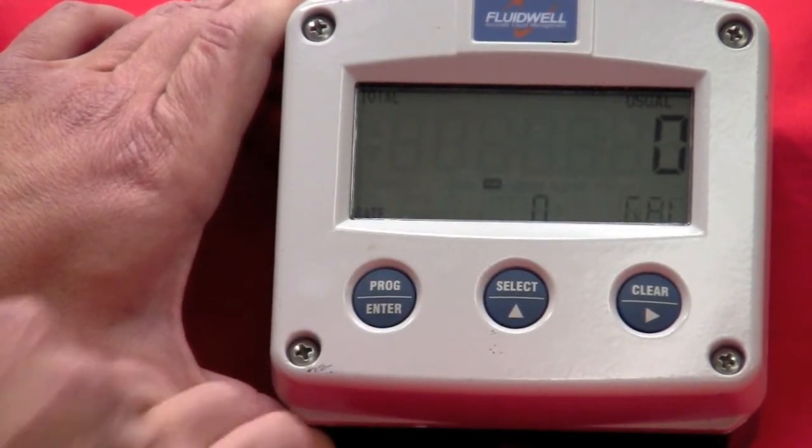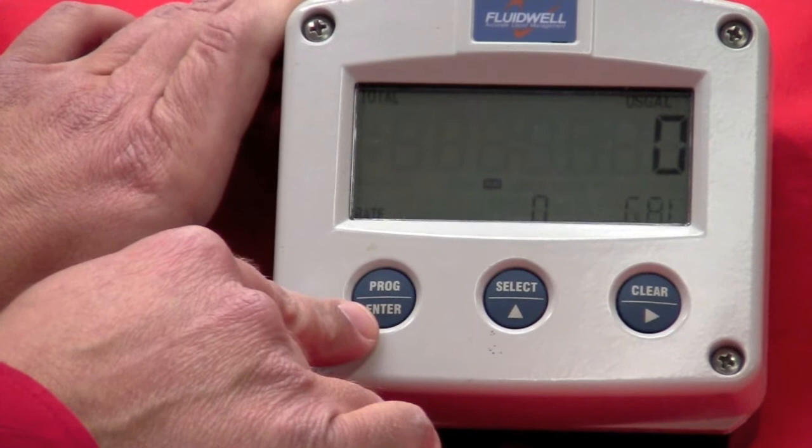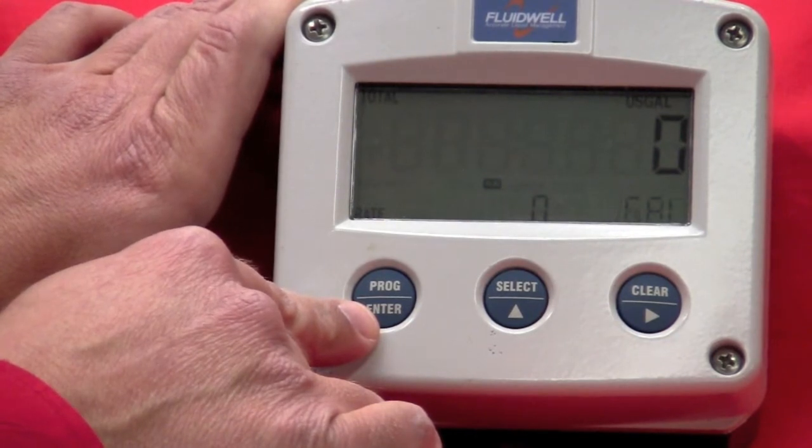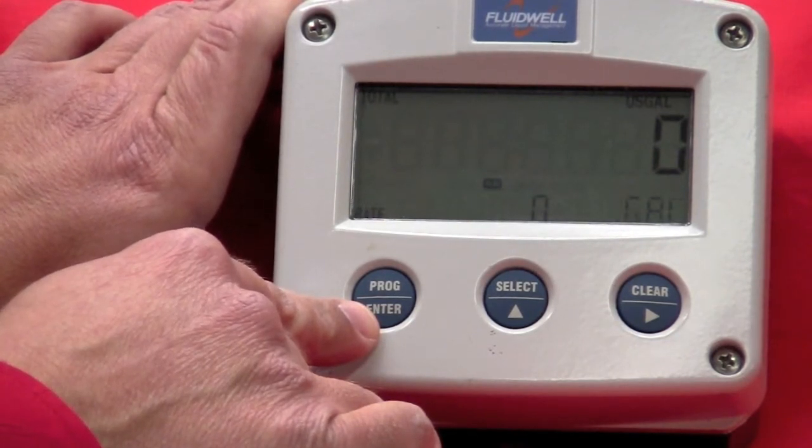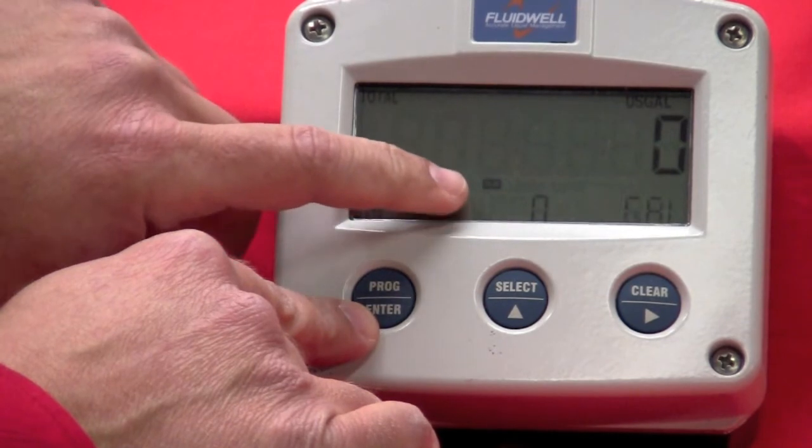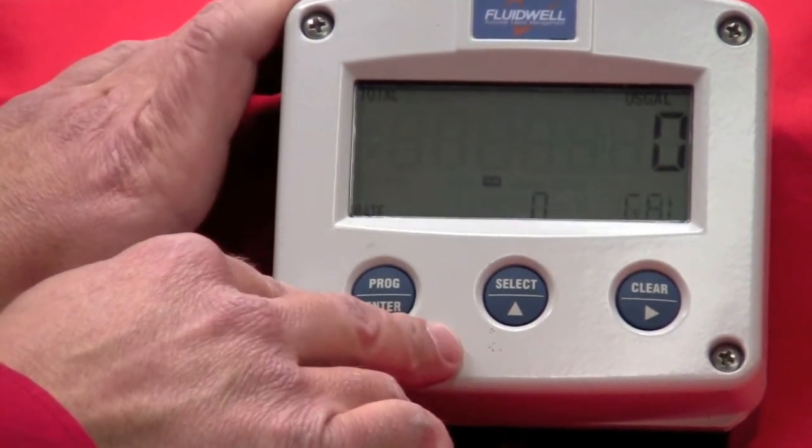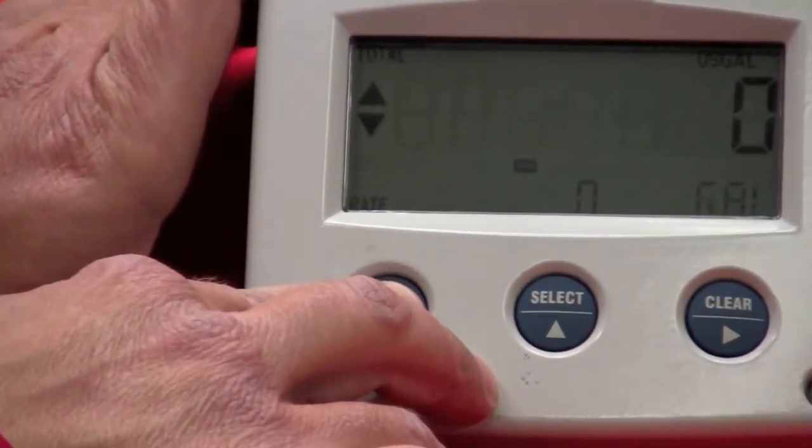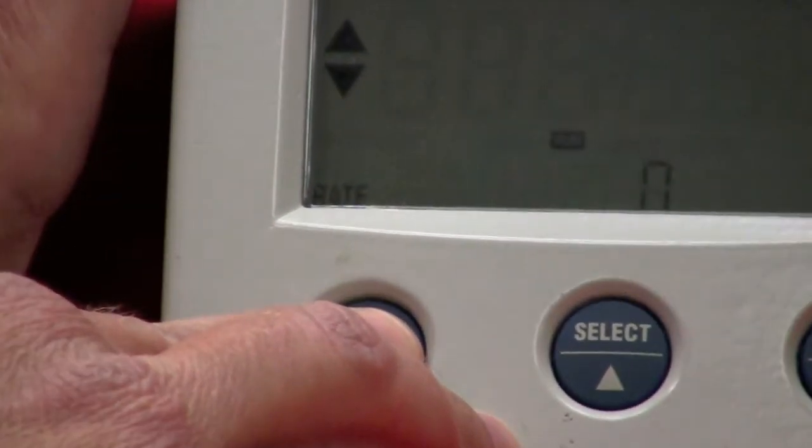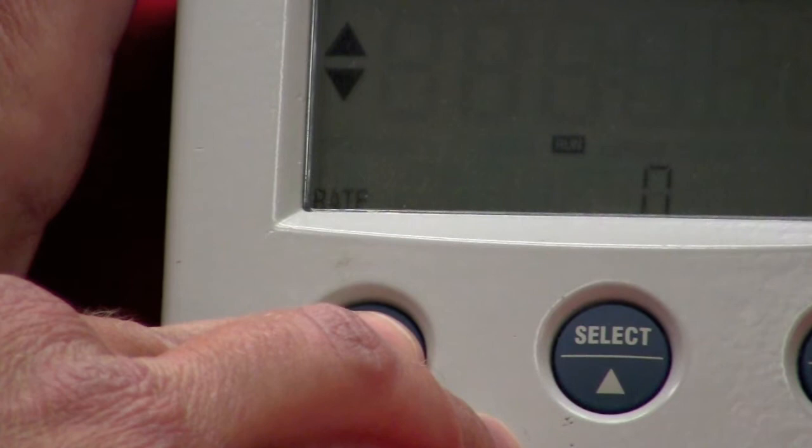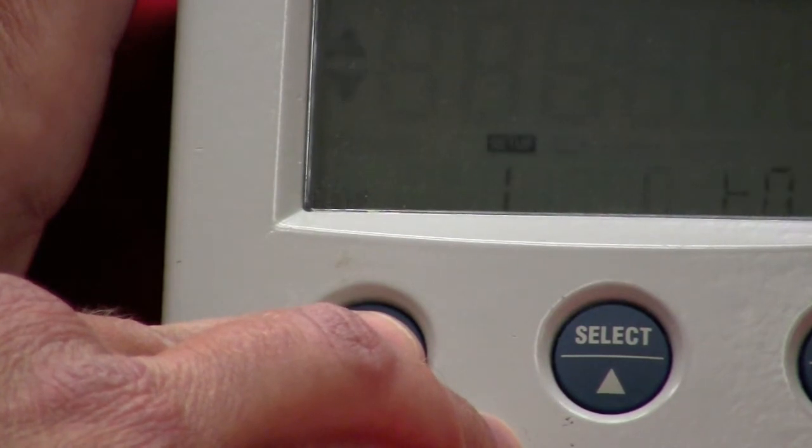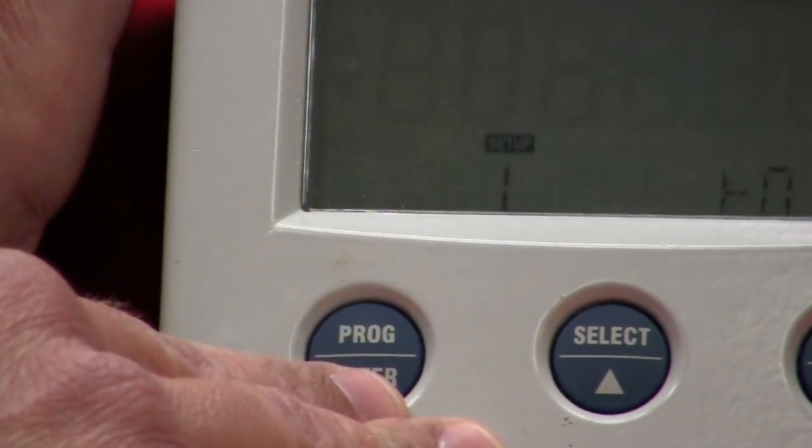Now, to get into programming the unit, we're going to use the program key, and I need to hold this button down for seven seconds to enter the programming mode. What you'll notice is the run mode will change to programming, and that will enable us to get into the menu structure of the meter. I'm going to push this in and wait for seven seconds. And now we're into the programming mode of the meter.